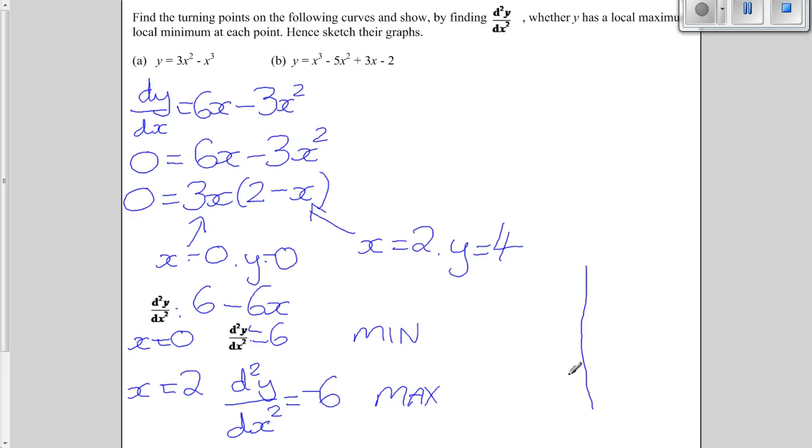So we can now actually sketch this graph. We know we've got a minimum at 0, 0, and we know we've got a maximum at 2, 4. And it's a quadratic—so we're going—sorry, it's a cubic, so we're going up, down, and down again. Look at that messy graph there.